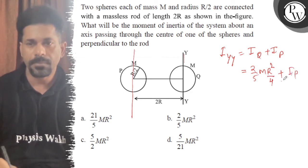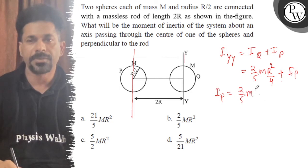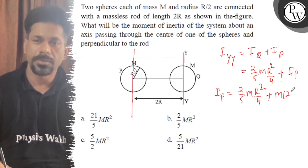So Ip is 2/5 M(R²/4) plus M times d², where d is 2R whole square.